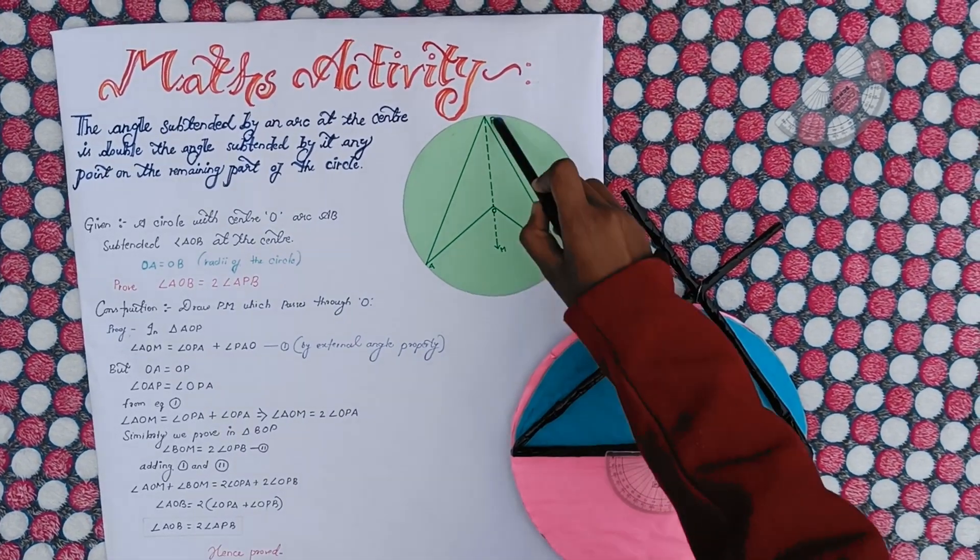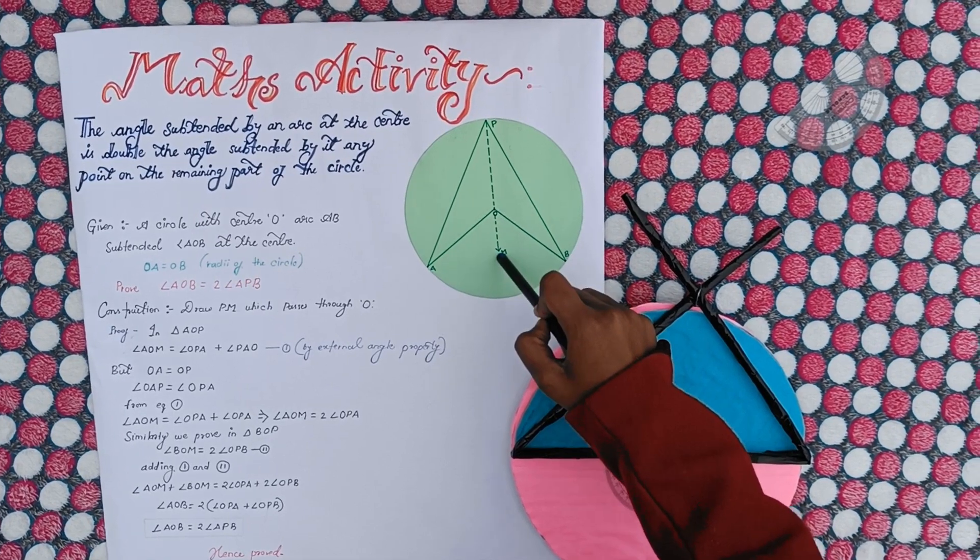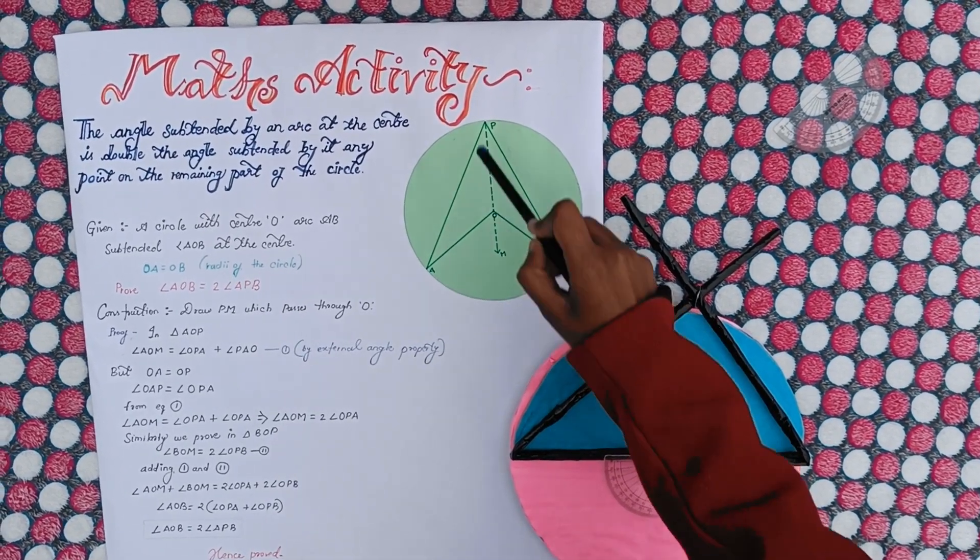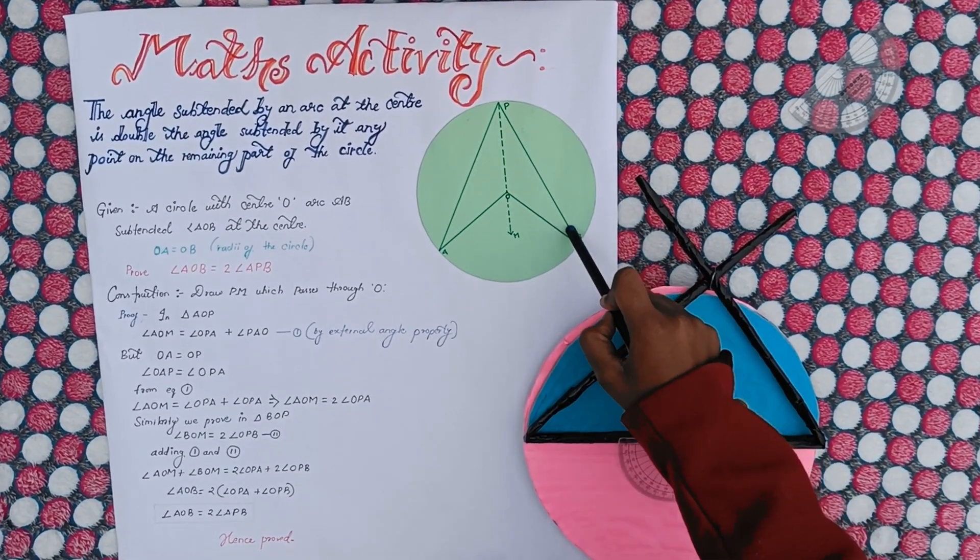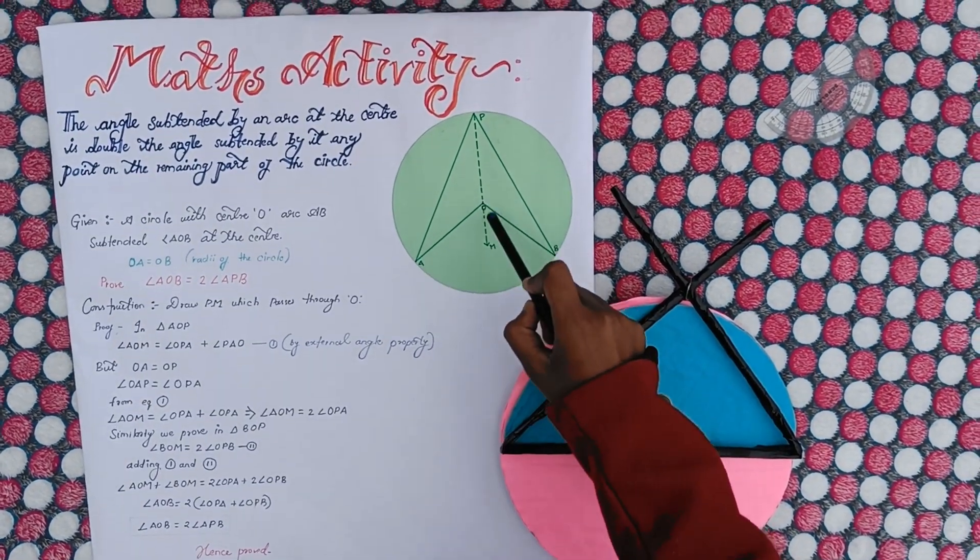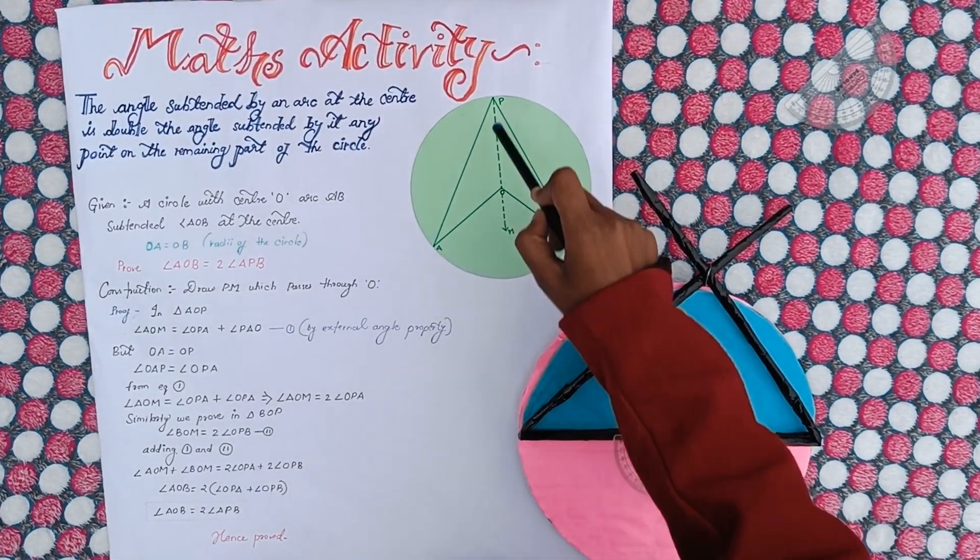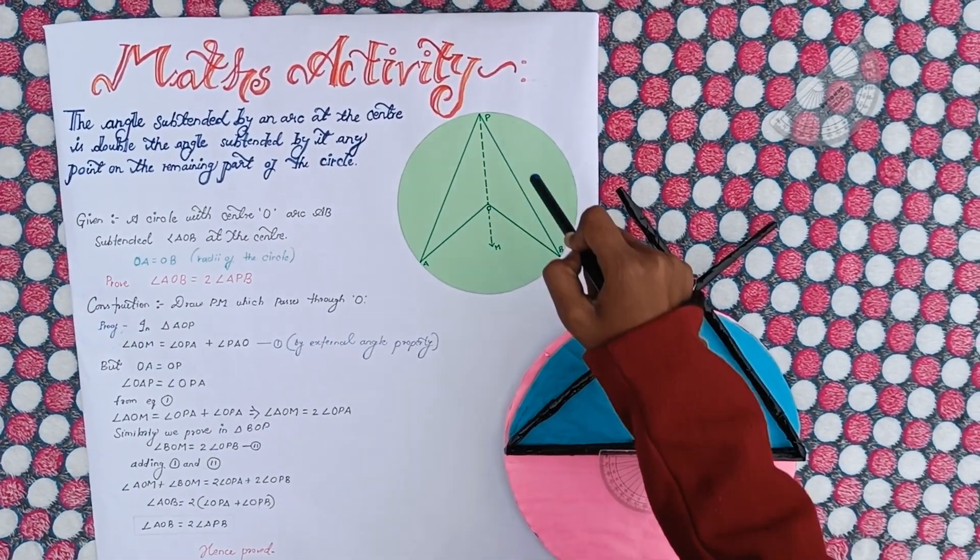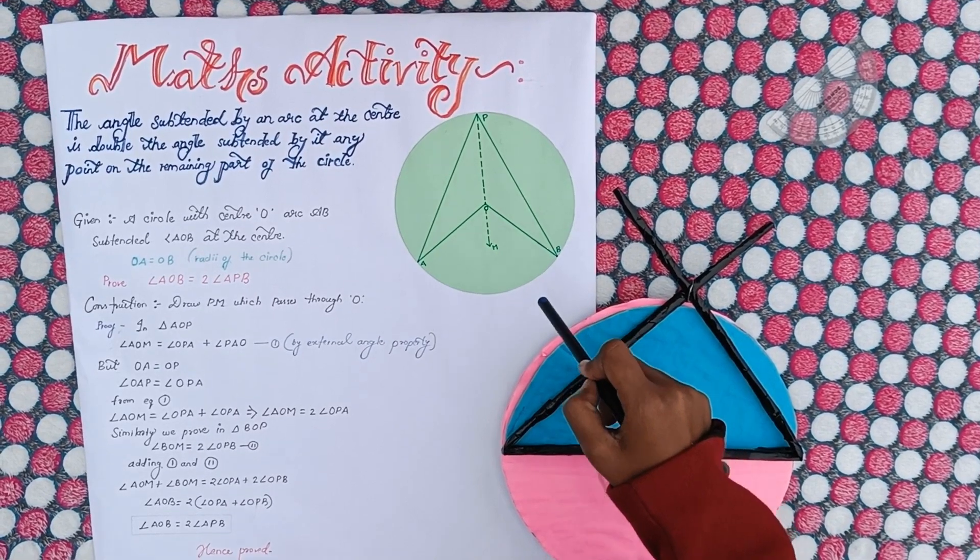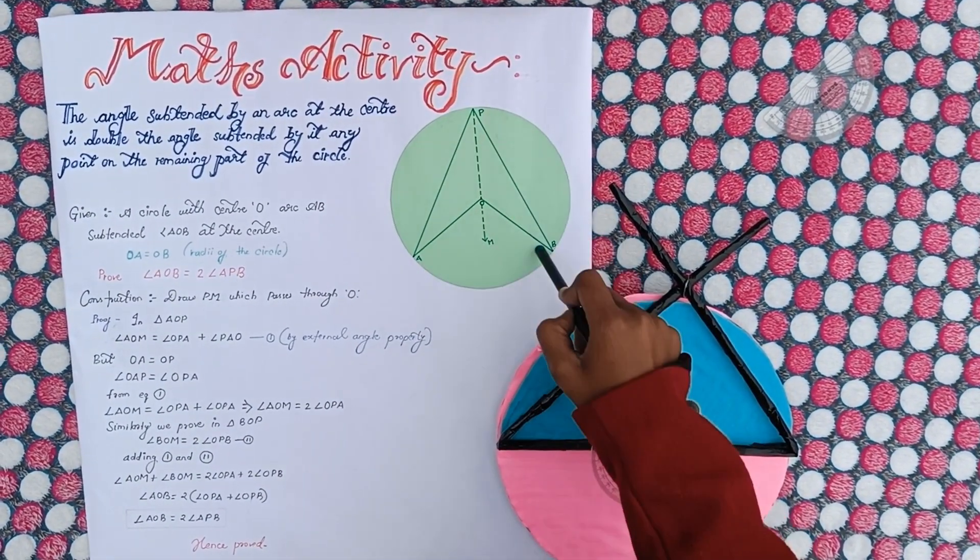Similarly we prove in triangle B-O-P, which implies that angle B-O-M is twice of angle O-P-B. By adding equations one and two, we get angle A-O-M plus angle B-O-M is equal to twice of angle O-P-A plus twice of angle O-P-B, which implies that angle A-O-B is equal to twice angle A-P-B. Hence proved.